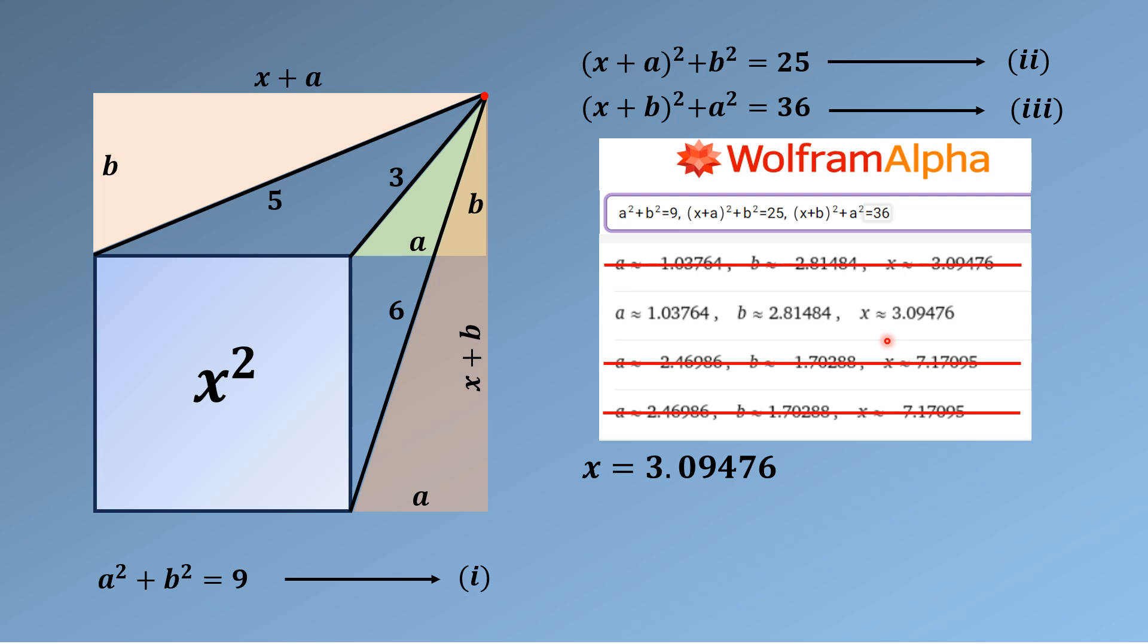Now the area of this square—the square looks here—so X² is equal to 3.09476².